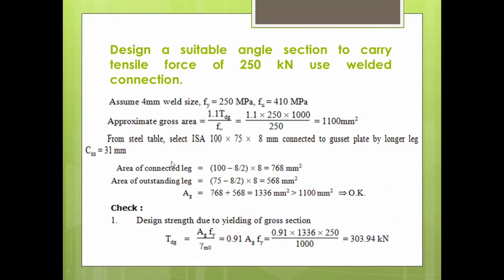Now we find the area of the connected leg: (100 − 8/2) × 8 = 768 mm². The area of the outstanding leg is (75 − 8/2) × 8 = 568 mm². The gross area of the section is therefore 1336 mm², which is more than the required 1100 mm².